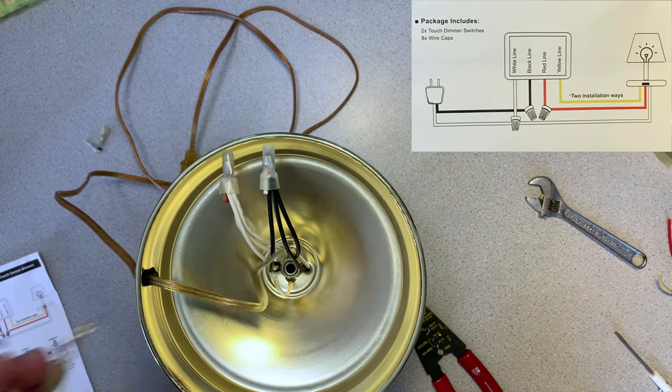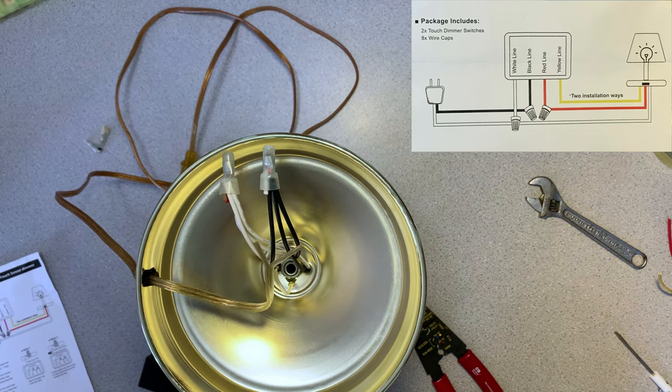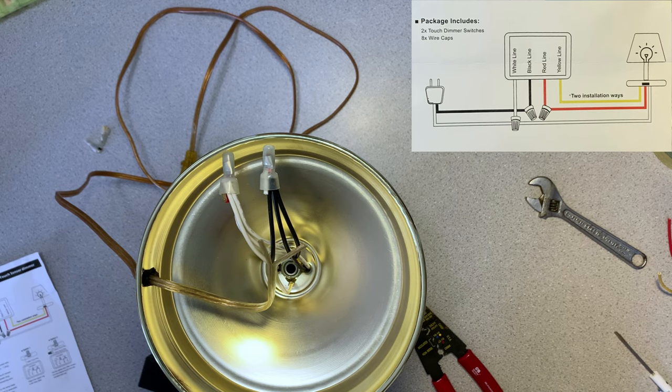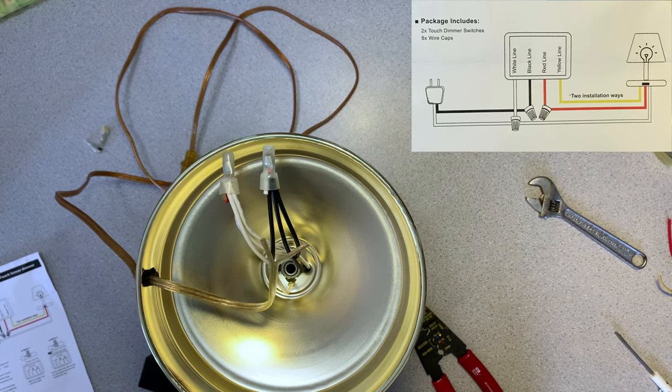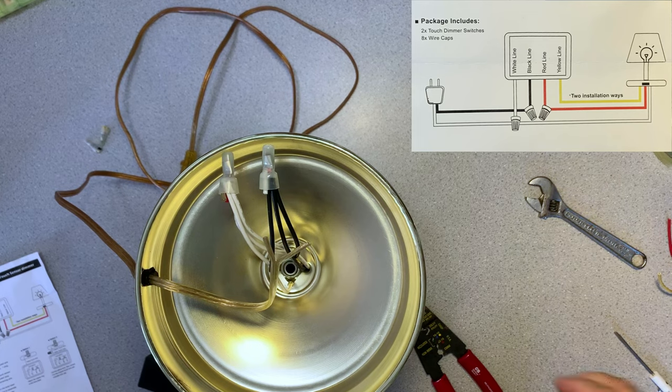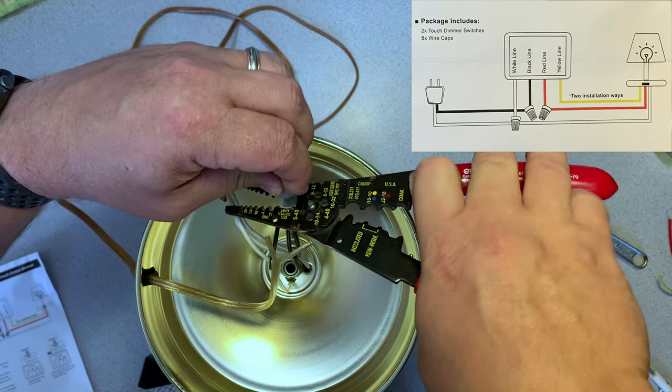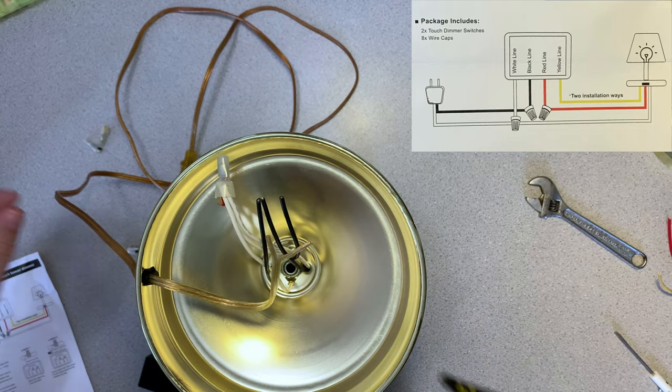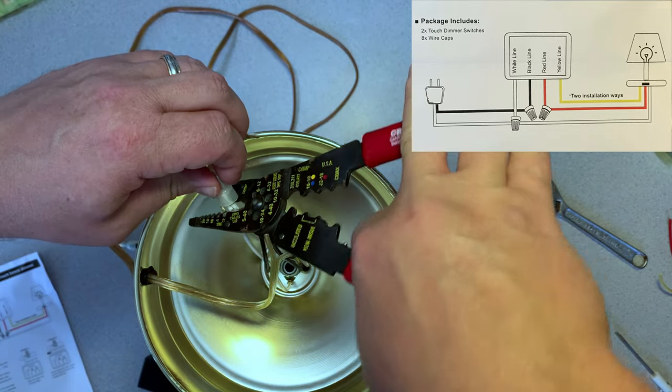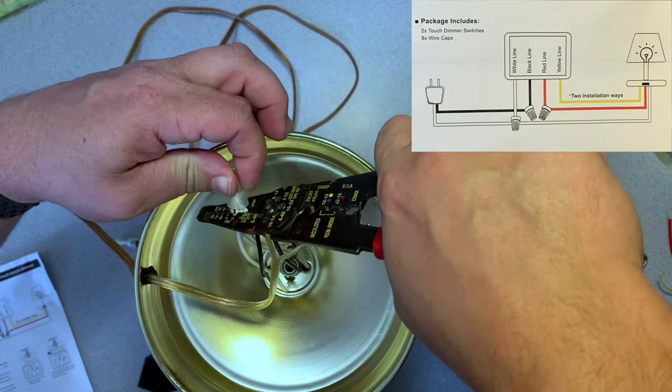So we go from the plug to the module through the black wires. From the red wire from the module to the black wire of the lamp. From the lamp we're going to connect all of the white wires which take us back to the power cord and completing the circuit.